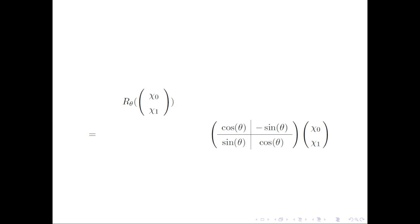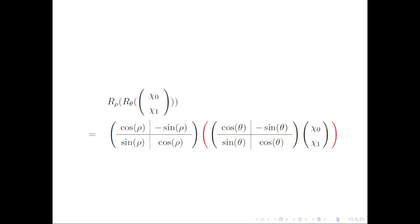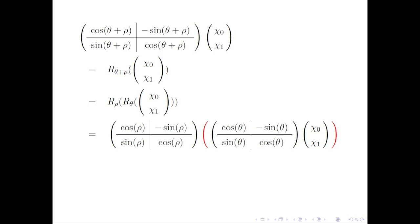Now let's manipulate all these insights. We start with vector x with components chi sub 0 and chi sub 1, and rotate this vector through angle theta. We know that this yields the same result as multiplying the vector x by the matrix with elements cosine theta on the diagonal and minus sine theta and sine theta above and below the diagonal. If we take the result and rotate it through angle rho, we can multiply by the matrix that represents rotation through angle rho. Rotating through angle theta and then through angle rho is the same as rotating through angle theta plus rho, which can be represented by a matrix involving cosine and sine of the angle theta plus rho.